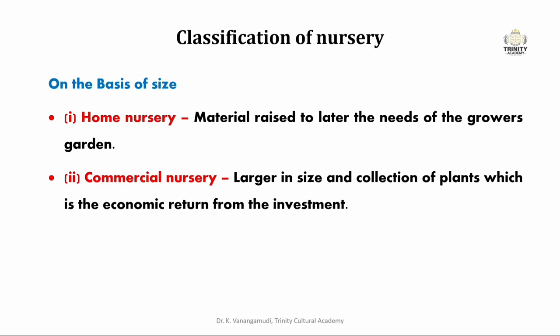Next, different classifications of nursery. Based on size, it is classified into home and commercial nursery. Home nursery is in a small area or garden in which plants are grown to meet the demands of the grower's own garden. Its main objective is to provide quality and true-to-type material for the own garden.